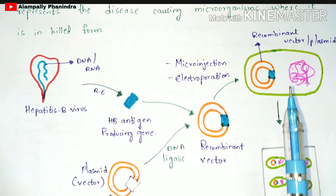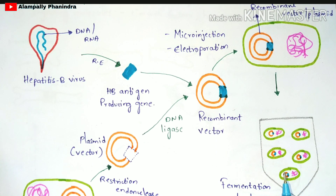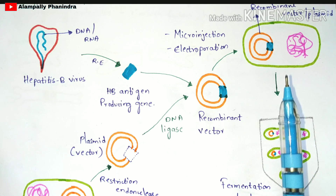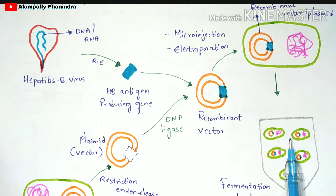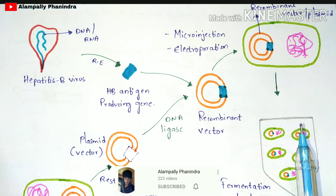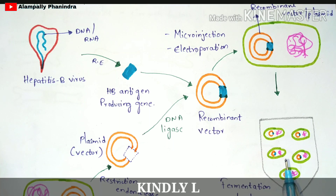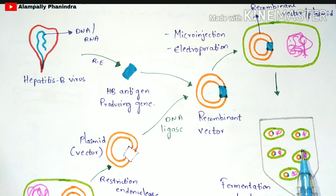The recombinant yeast cells are now placed in the fermentation tank. The fermentation tank contains blades and a nutrient medium — either liquid or gel-like. The recombinant yeast cells utilize this nutrient medium and undergo proliferation, meaning cell division, so the number of cells increases in the fermentation tank. The main aim of fermentation is to convert primary metabolites into secondary metabolites — here the secondary metabolites produced are the vaccines.